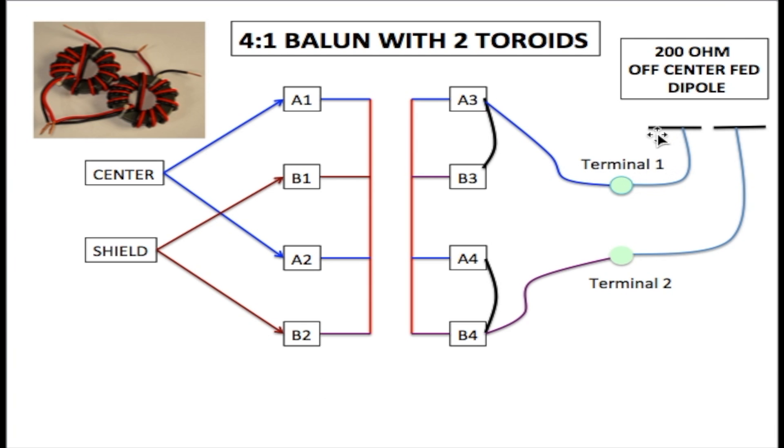We connect one element of the dipole antenna to A3, or it could be B3 since they're tied together. The other side of the element connects to B4, or A4 since they're tied together as well. And that's basically it. This is how you design a 4 to 1 balun using two toroids.